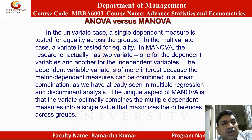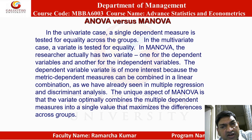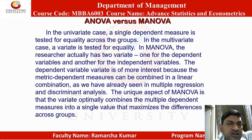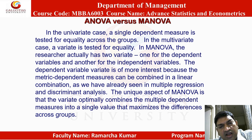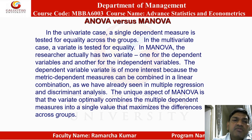ANOVA vs. MANOVA: In the univariate case, a single dependent measure is tested for equality across groups. In the multivariate case, a variate is tested for equality. In MANOVA, the researcher actually has two variates — one for the dependent variables and another for the independent variables. The dependent variable variate is of more interest because metric dependent measures can be combined in a linear combination, as seen in multiple regression and discriminant analysis.